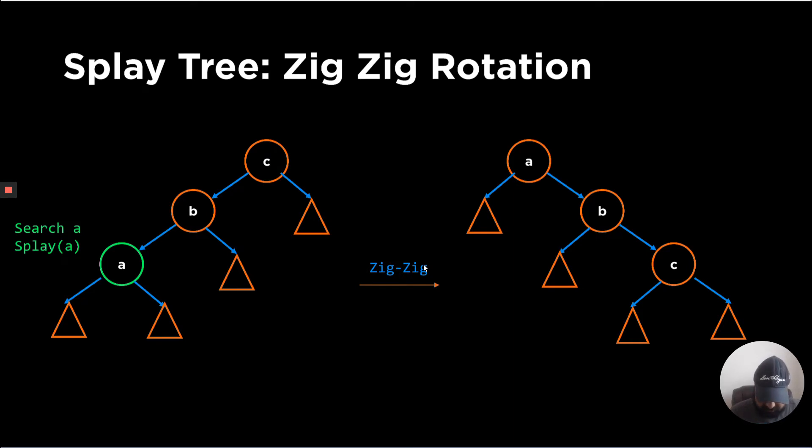So here, if we try to search A in this particular tree, let's say if this was a longer tree and we are trying to find A, which was somewhere there in the tree, you perform a zigzag rotation, which is the first type of rotation. You make A as now the grandparent, B remains the same, and C becomes the child of B.